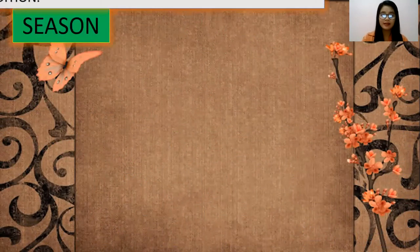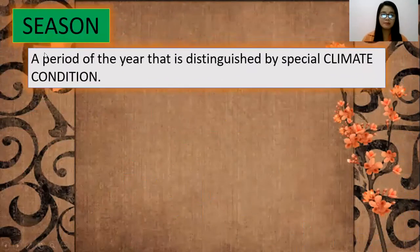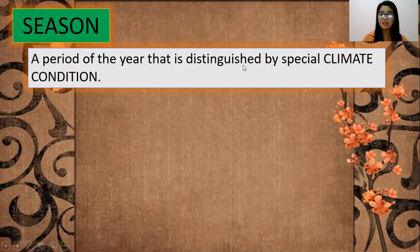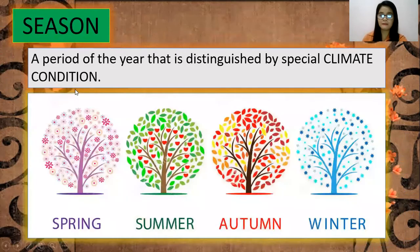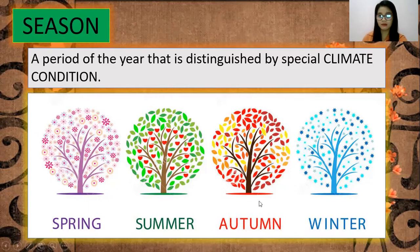Before that, we're going to know the meaning of season. Season is a period of the year that is distinguished by special climate conditions. And we have four seasons in the world: spring, summer, autumn, and winter.